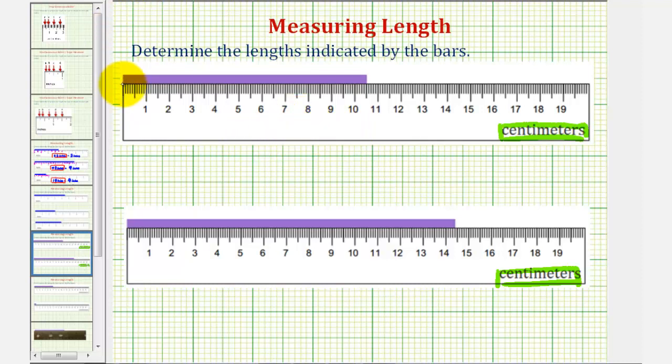So starting here, we can count the number of whole centimeters: one, two, three, four, five, six, seven, eight, nine, ten. We'll notice how the length is longer than ten centimeters. So from here, we can count the number of tick marks, which again, each tick mark represents one-tenth of a centimeter.